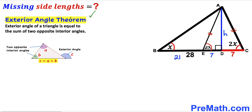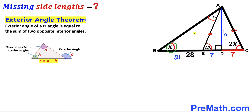Now let's recall the exterior angle theorem. According to this theorem, the exterior angle of a triangle equals the sum of the two opposite interior angles. We can see that angle AED (which is 2X) is our exterior angle, and it equals the sum of the two opposite interior angles. So angle BAE must be X, since X plus X equals the exterior angle 2X.